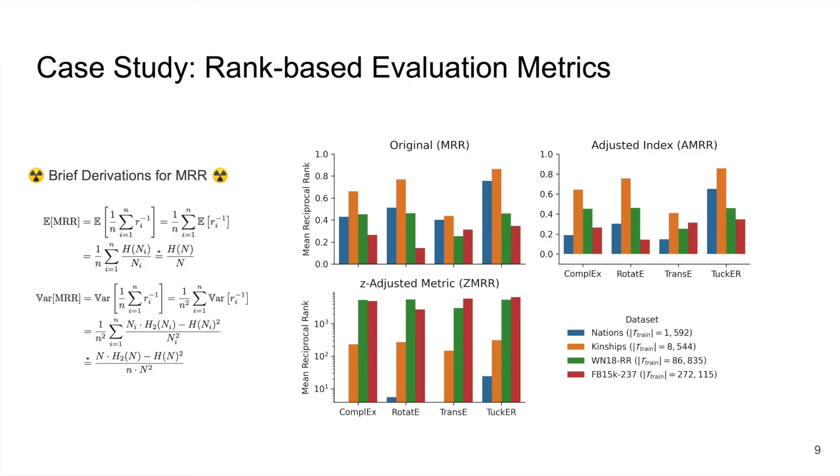So as a case study to demonstrate these new metrics, we want to present how they can be more interpretable in practice. First, we re-evaluated a few standard datasets with a few different flavors of knowledge graph embedding models. And there's a few major insights just from this one picture, focusing on the mean reciprocal rank. First, the base metric suggests that ComplEx performs similarly on WordNet-18 RR and Nations. But the adjusted metric and the z-adjusted metric show that the difference is actually more remarkable.